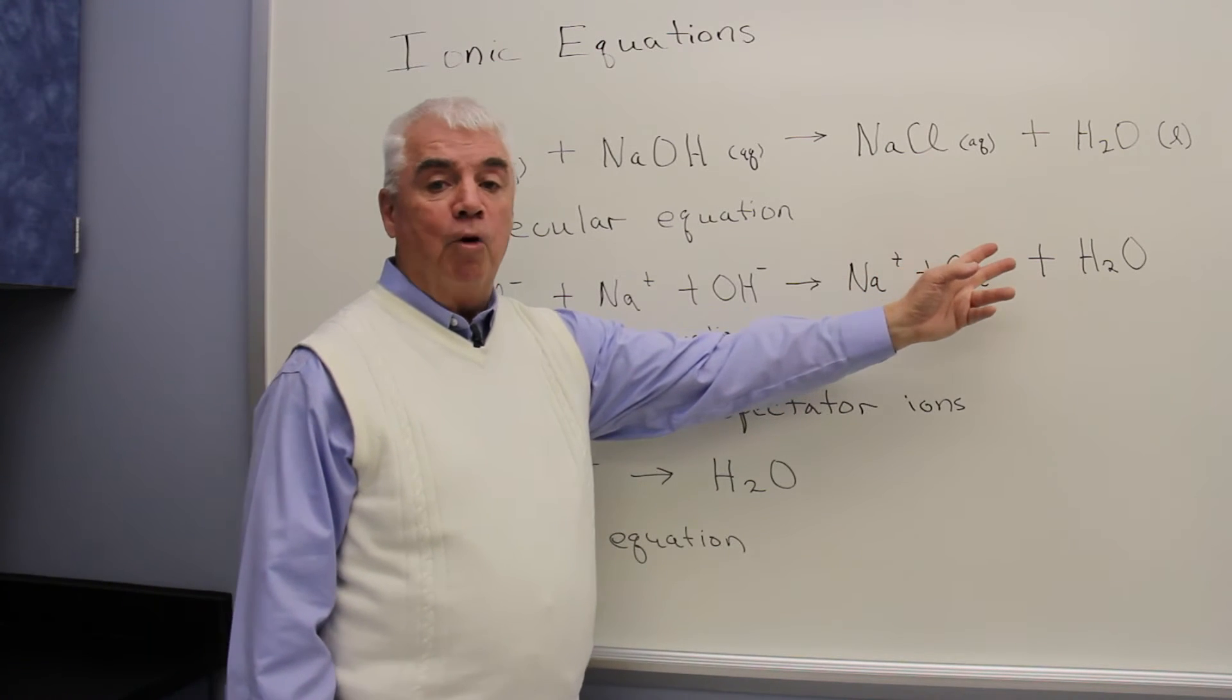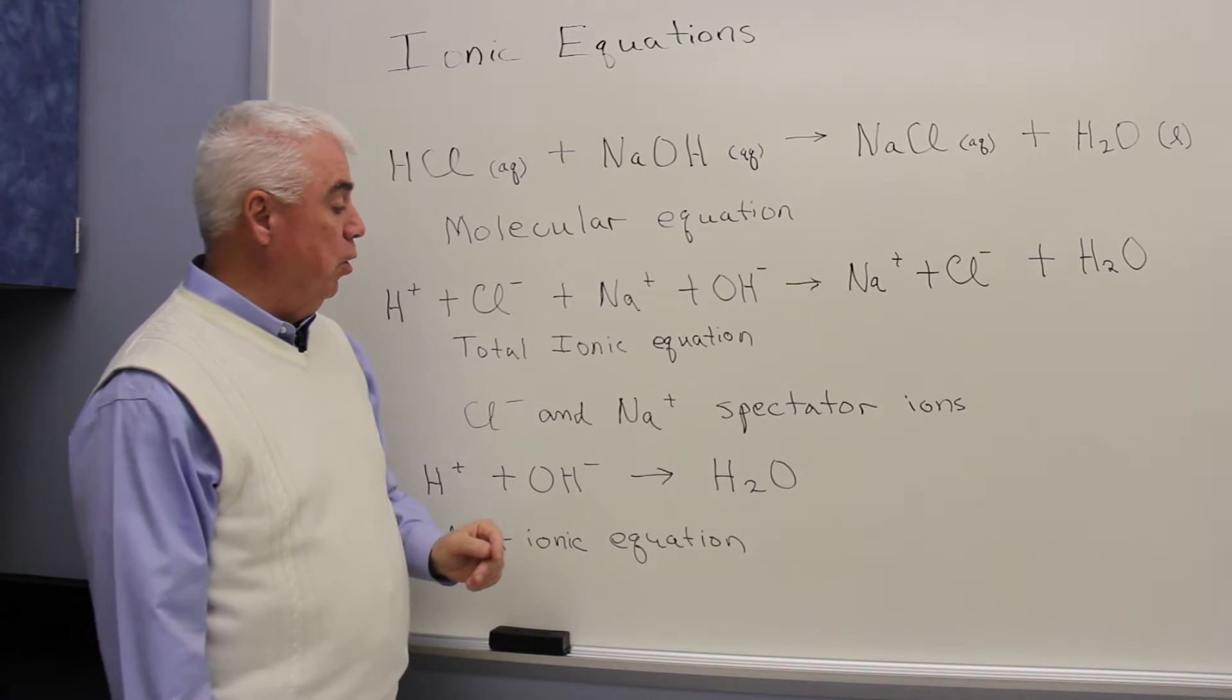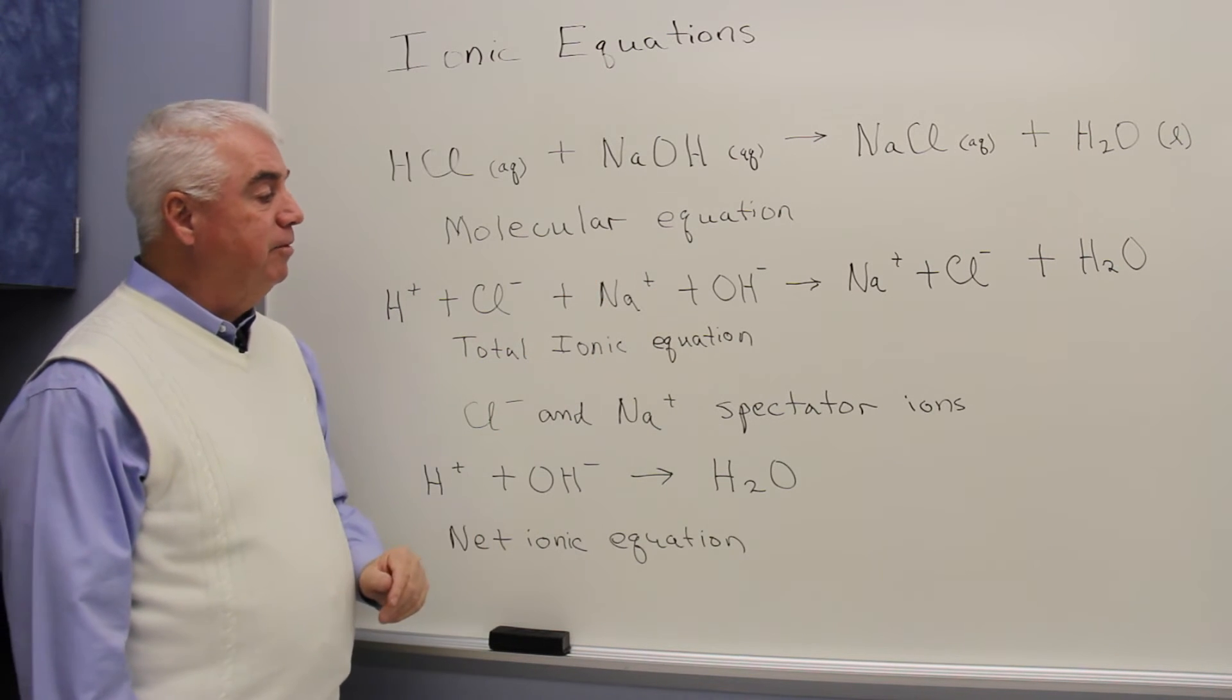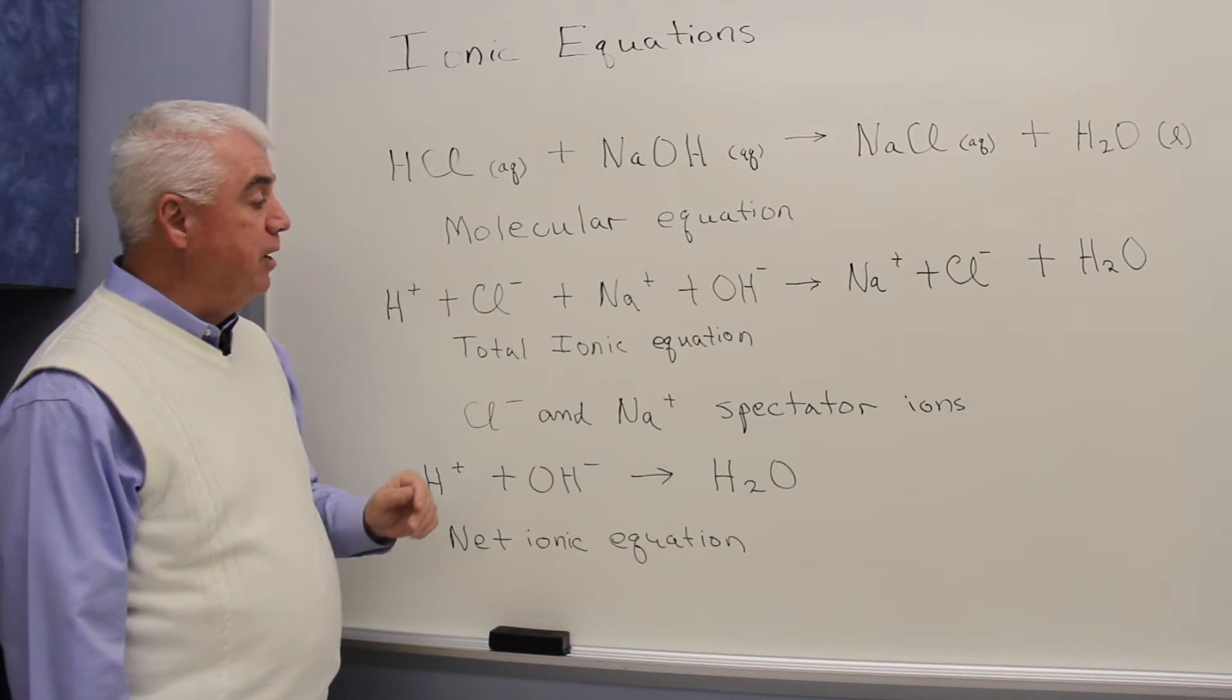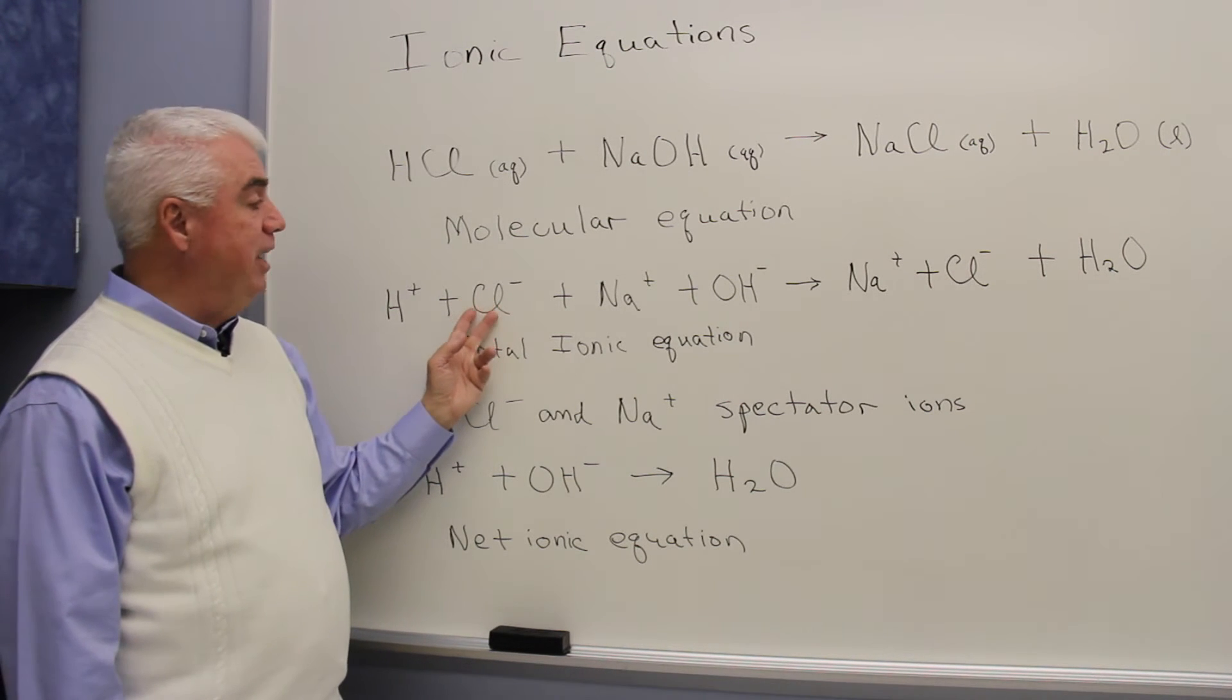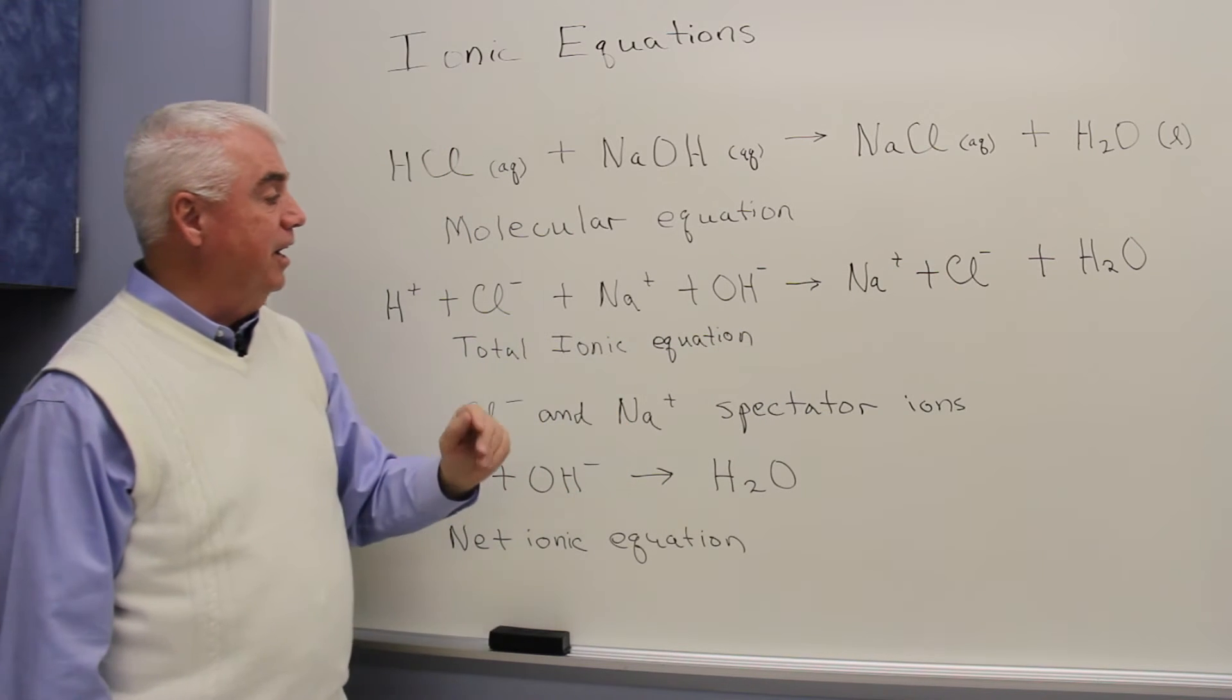Water can form ions, but it's a lot more accurate to write it as H₂O. This is called the total ionic equation. We've indicated everything in ions where they break apart and dissociate. And you'll notice something interesting about this equation. On the left-hand side, we have Cl⁻. And again, it's repeated over here on the right-hand side.